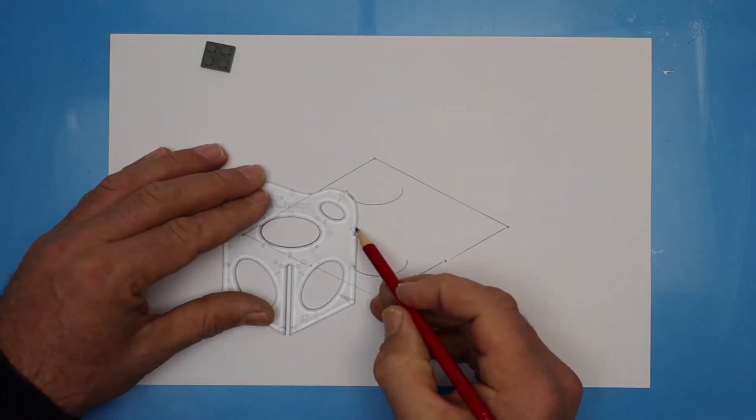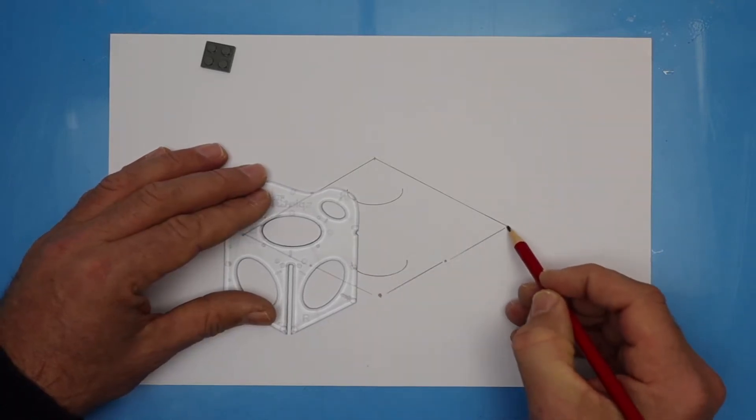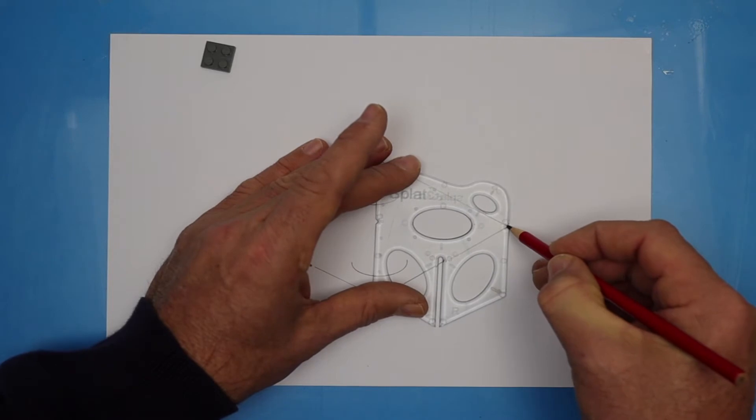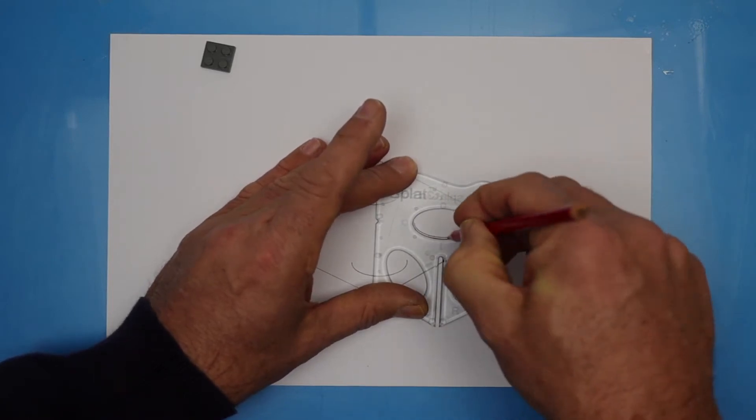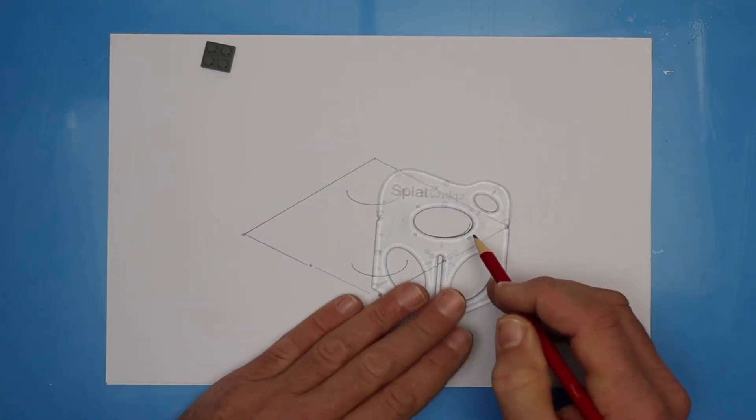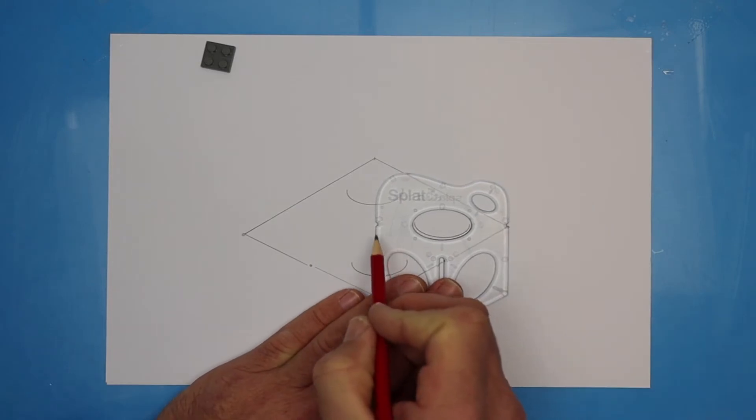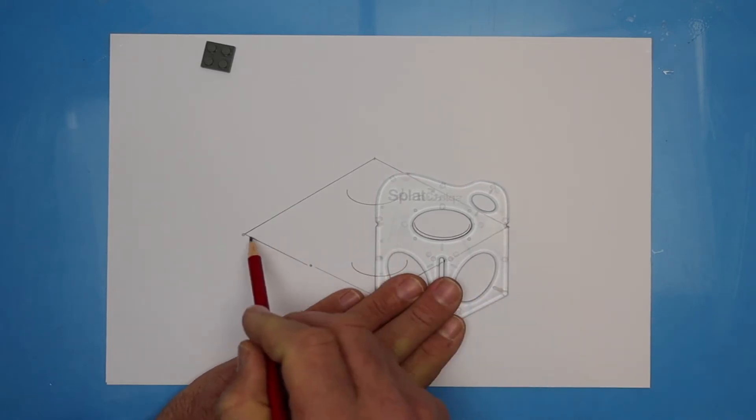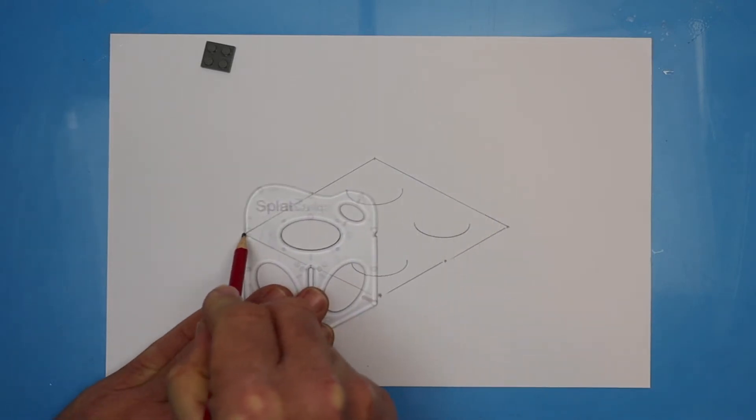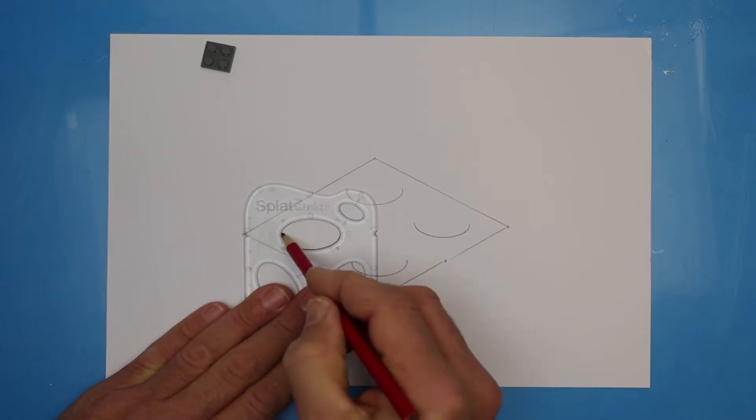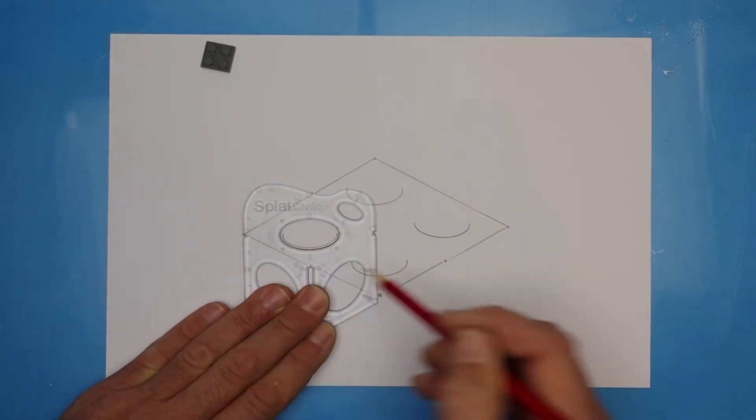Now for the third. Find the right hand blip and line it up with the right hand dot. And the top half. Just kidding. The bottom half. Good. Now the same on the left. The left blip lines up with the left dot. And just the bottom half. Excellent.